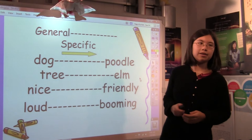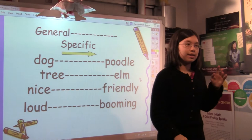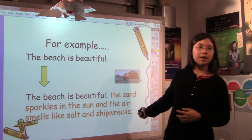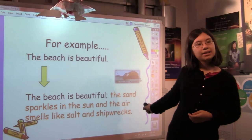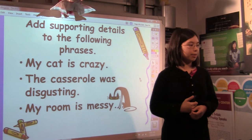So all of these words, they might look sort of specific, but they can actually be specified even more. So the reason why you want to be specific is so that when I'm reading what you're writing, it's more interesting and it's also easier for me to visualize, to see in my head. Add specific details and descriptions of what things look like, smell like, feel like, and sound like. For example, the beach is beautiful could be replaced by the beach is beautiful, the sand sparkles in the sun, and the air smells like salt and shipwrecks. The beach is beautiful isn't too bad by itself, but when you add this sentence then you kind of start to see the whole picture. You see the sparkling sand and you smell the salt and shipwrecks in the air.